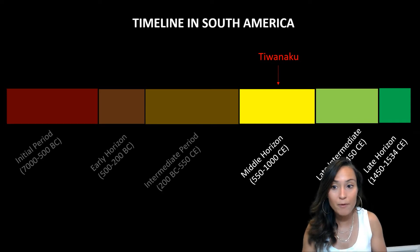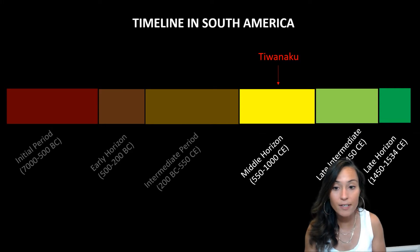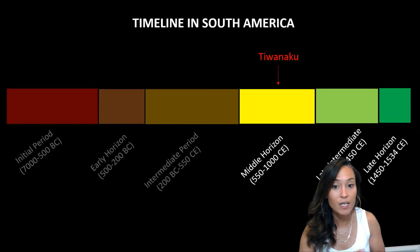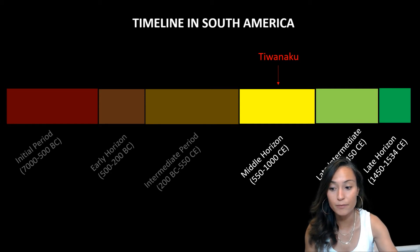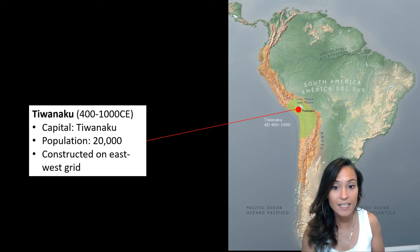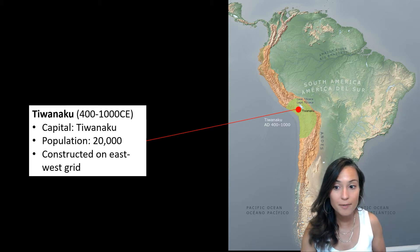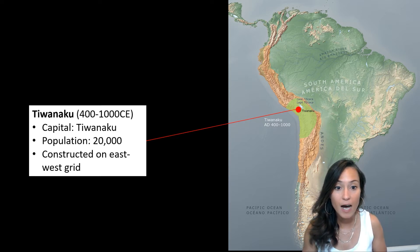Today I want to start with the Middle Horizon period, which stretches from roughly 550 to 1000 CE. A key archaeological site and civilization during this period is called Tiwanaku. Tiwanaku is the highest city in the ancient world, sitting at 12,600 feet. At the height of its occupation, Tiwanaku had an estimated population of roughly 20,000 people, occupied between 400 and 1000 CE.